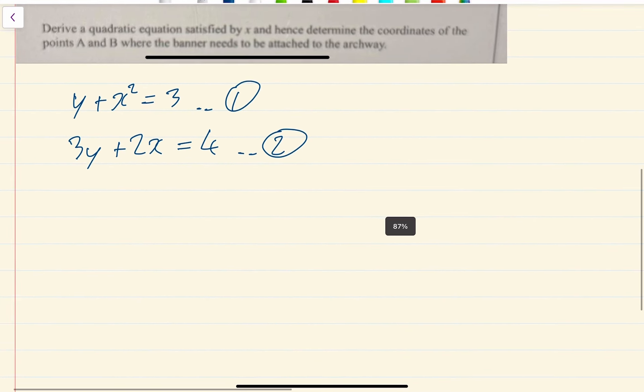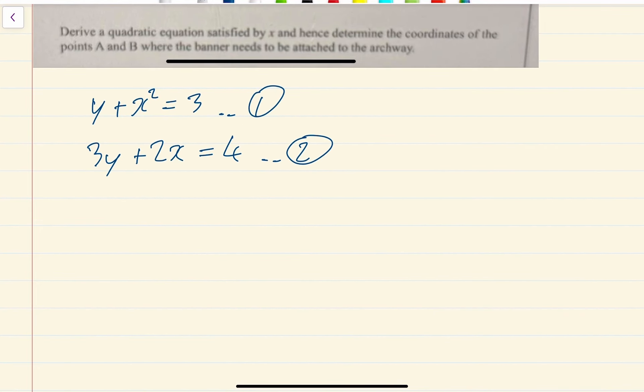Now what you want to do in these equations is rearrange. So you rearrange the linear equation, and I'm going to rearrange it to make y the subject. So I've got 3y is equal to 4 minus 2x. That means y would be equal to 4 minus 2x all over 3.